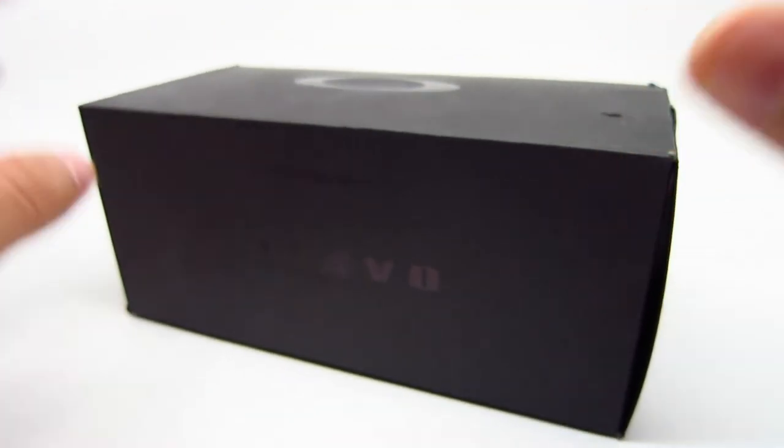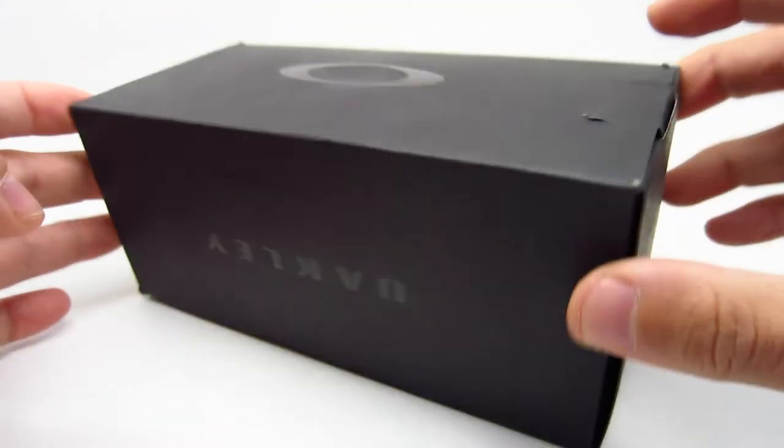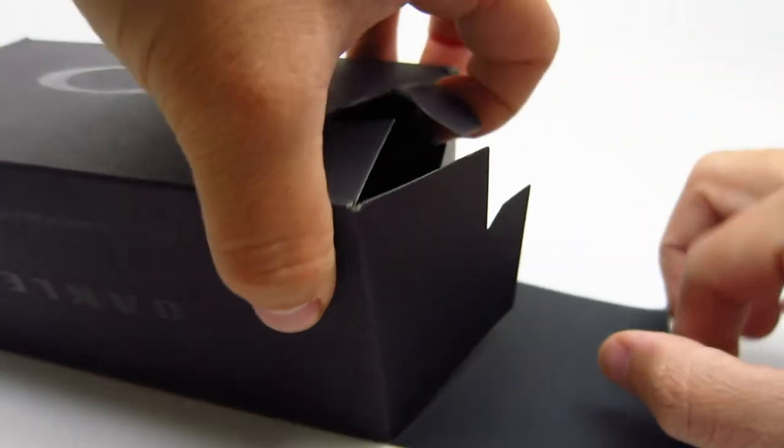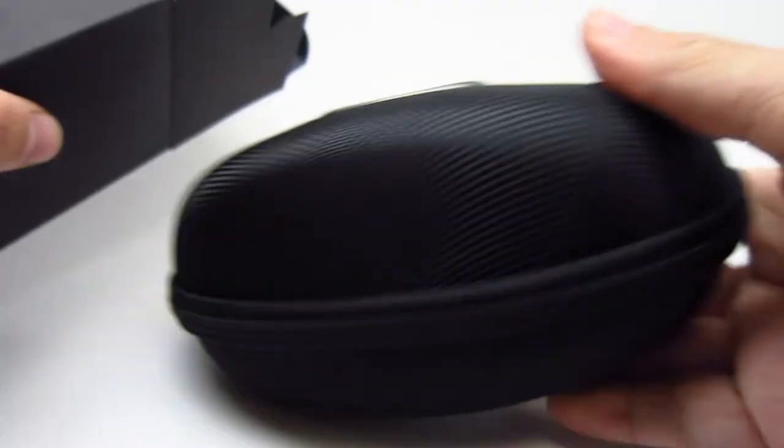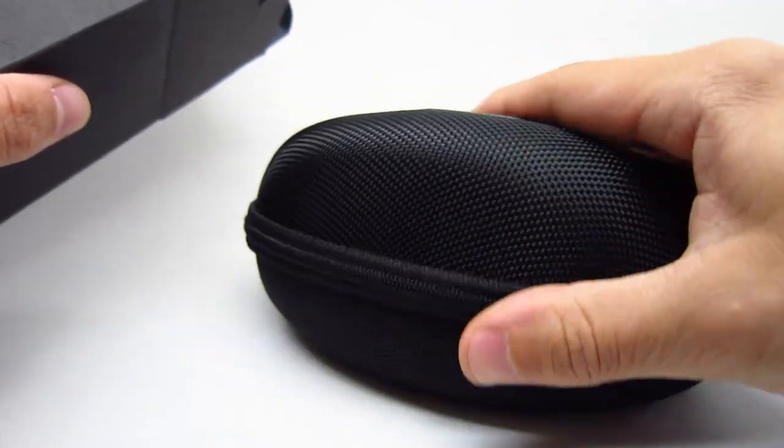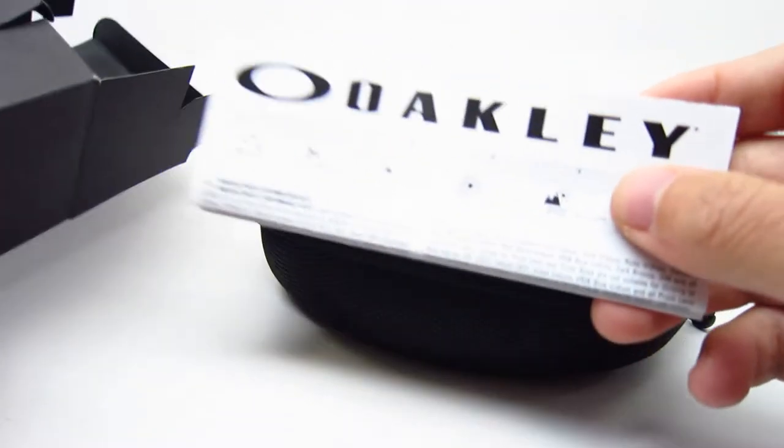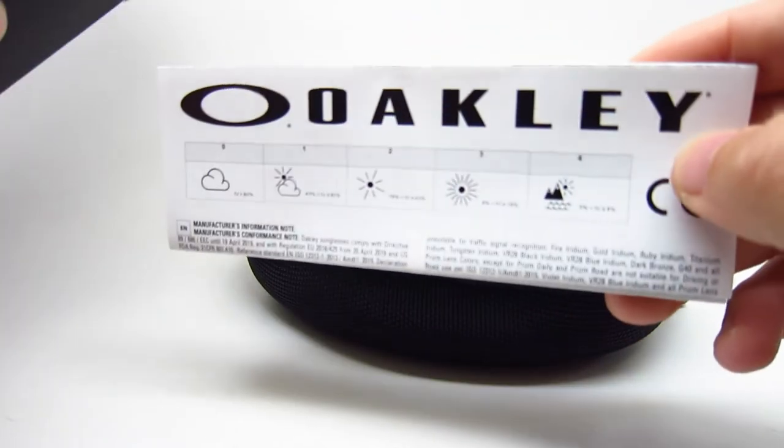So it's going to be a little review unboxing. It comes in the Oakley black box here. Inside we get the Oakley hard case and the Oakley Manufacturer's Warranty Booklet.